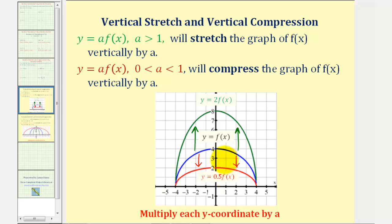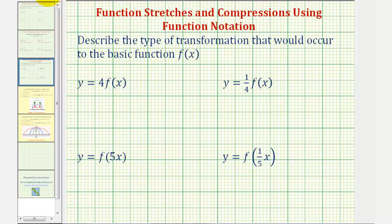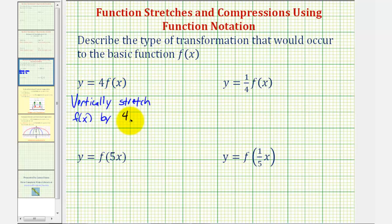So going back to our examples, if we have y equals four times f of x, this will vertically stretch f of x by four. And for y equals one-fourth times f of x, this will vertically compress f of x by one fourth.